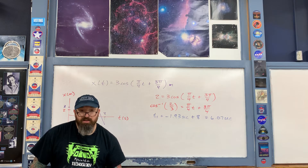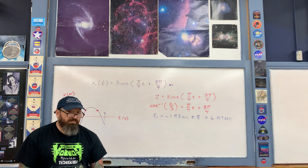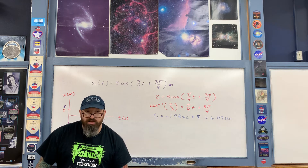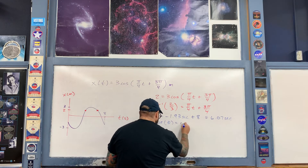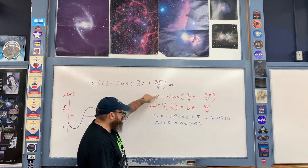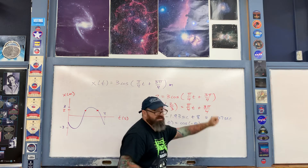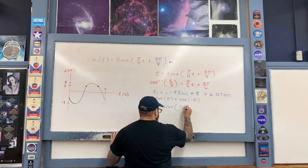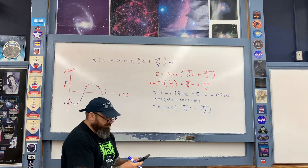To find the second time, we take into account that cosine is an even function — meaning cosine(θ) = cosine(−θ). Think of the angle in the first quadrant; the negative angle is in the fourth quadrant, and their cosines are equal. So I go back to the equation, treat the entire argument as θ, make it negative, distribute the negative sign through, and solve for the second time t.